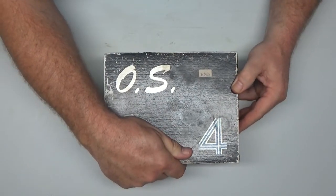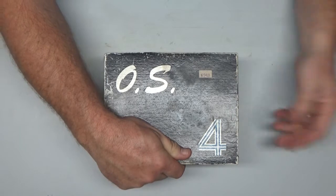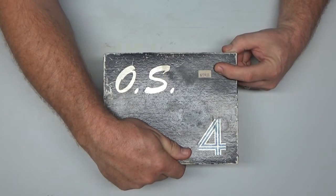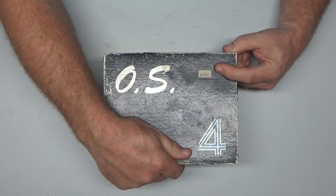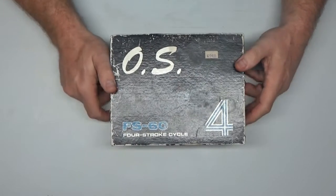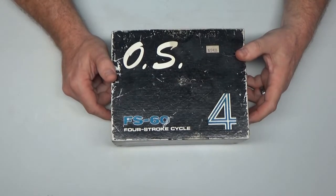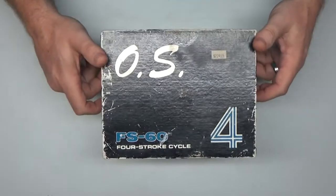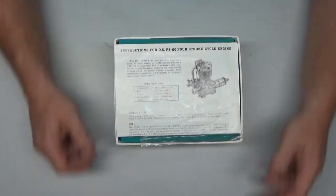The reason I'm fortunate today is because of this. Well that's just an old OS four-stroke box. Yes it is, and if you look at the price tag on this it says $224.95. This is not just any old OS four-stroke, this is an FS 60 open rocker four-stroke, something that I've always kind of wanted for a long time.